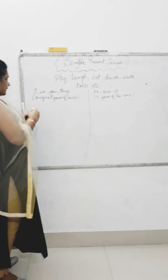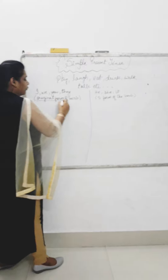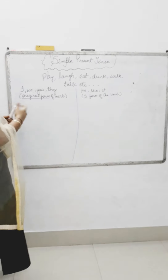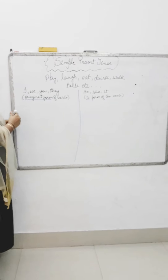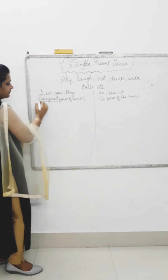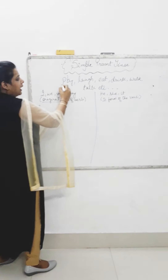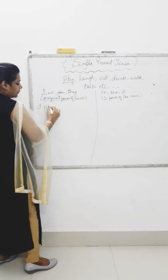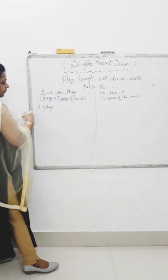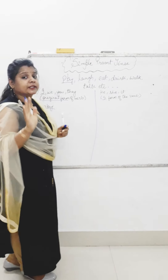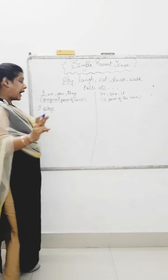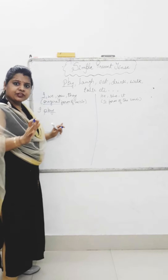Now, what is the original form and what is the S form? I will explain. First, we will write the subject. For example, I begin with the subject I. I play. This 'play' is the original form, because there are no changes to the word. I simply wrote 'I play' — no changes.